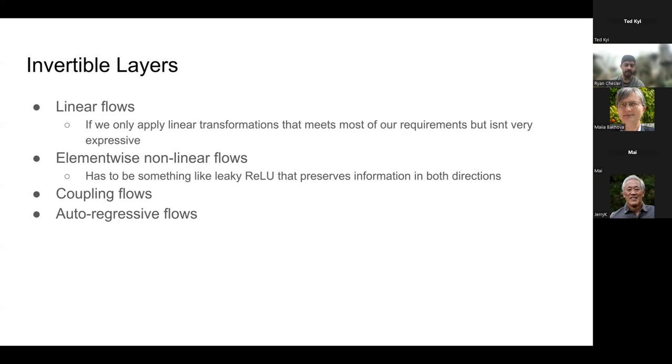The other thing they laid out was element-wise non-linear flows. That could be something like leaky ReLU. The problem with some activation functions is you can only do it one direction. Like a ReLU, it sets everything to zero, you're ending up with this problem where you can't go backwards, you just lost all of that information. If you have leaky ReLU, it's non-linear but it still preserves the information, so you can actually recover it back on the other end. They also talk about coupling flows and autoregressive flows.